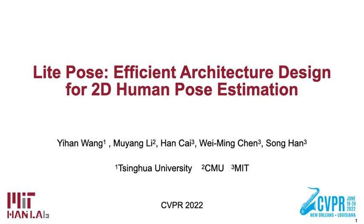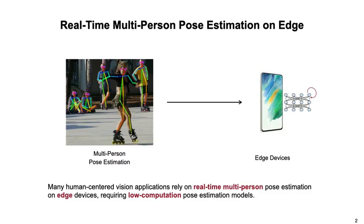In this video, we introduce our work LightPOS: Efficient Architecture Design for 2D Human Pose Estimation. Multi-person pose estimation aims to automatically locate human body parts from images or videos. In many real-world human-centered applications, real-time multi-person pose estimation on edge devices plays an important role, requiring low-computation pose estimation models.